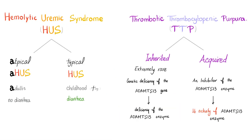As you know, hemolytic uremic syndrome is divided into atypical and typical, but TTP is divided into inherited and acquired. We have atypical HUS — this happens in adults and has no diarrhea — contrasted with typical HUS, which happens in children and is associated with diarrhea. In the good old days, typical was known as diarrhea-positive HUS and atypical was called diarrhea-negative HUS.